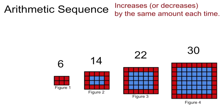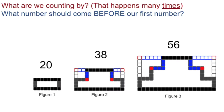If we want to quickly come up with a direct formula for an arithmetic sequence, we want to ask ourselves two questions. Question number one, what are we counting by? Question number two, what number should come before the first number? Or another way to say that is what is figure number zero? Those are our two questions.